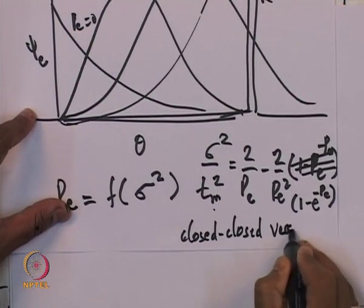Once you know the Peclet number, you can get conversion. Before that, this relationship was obtained for a closed-closed vessel — meaning before the inlet and after the outlet D_A = 0, there is no dispersion. The boundary conditions were written accordingly. Always remember: the expression I derived is for a closed-closed vessel — this is very important.